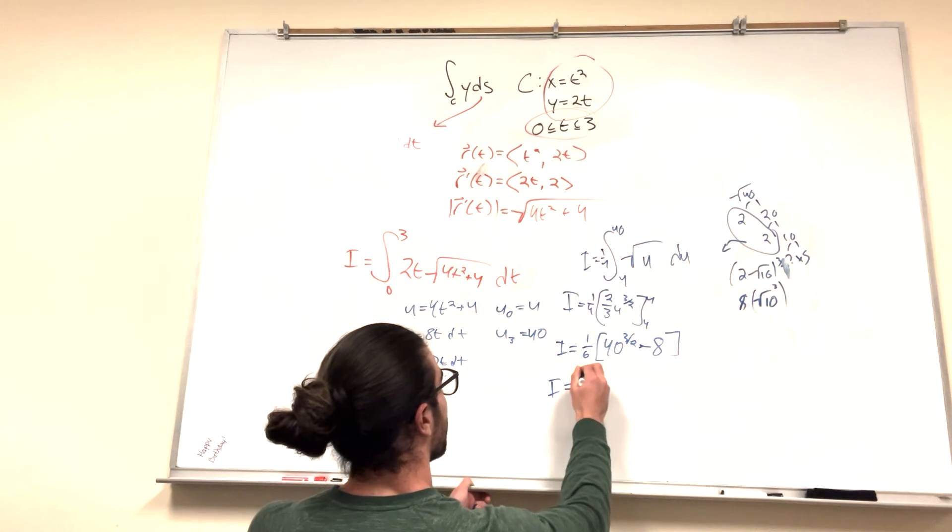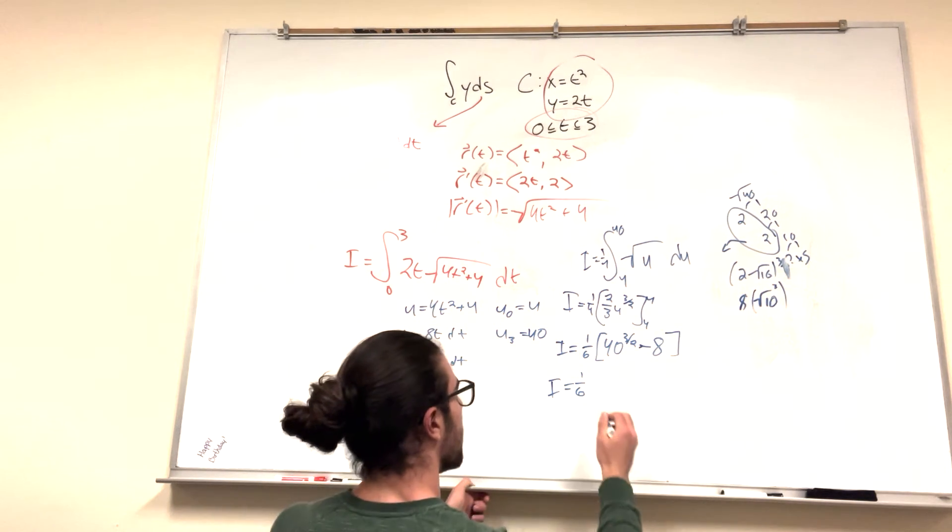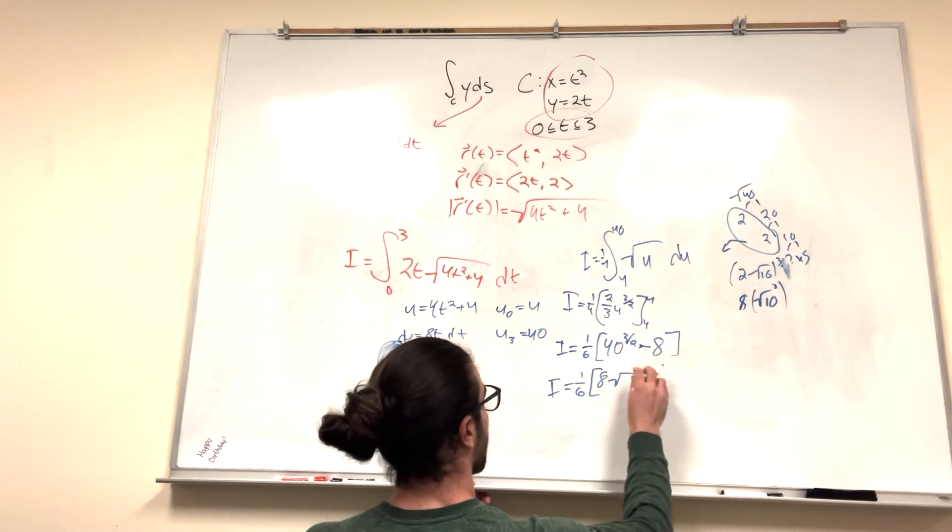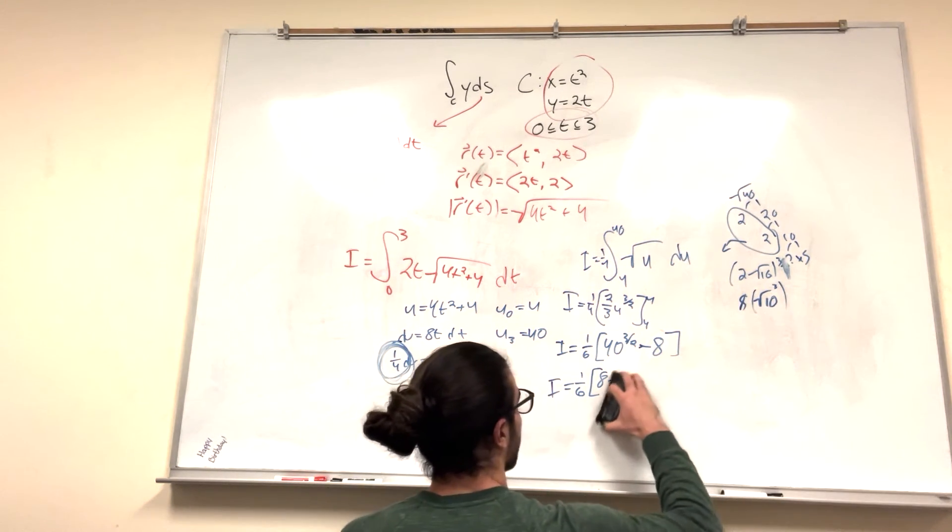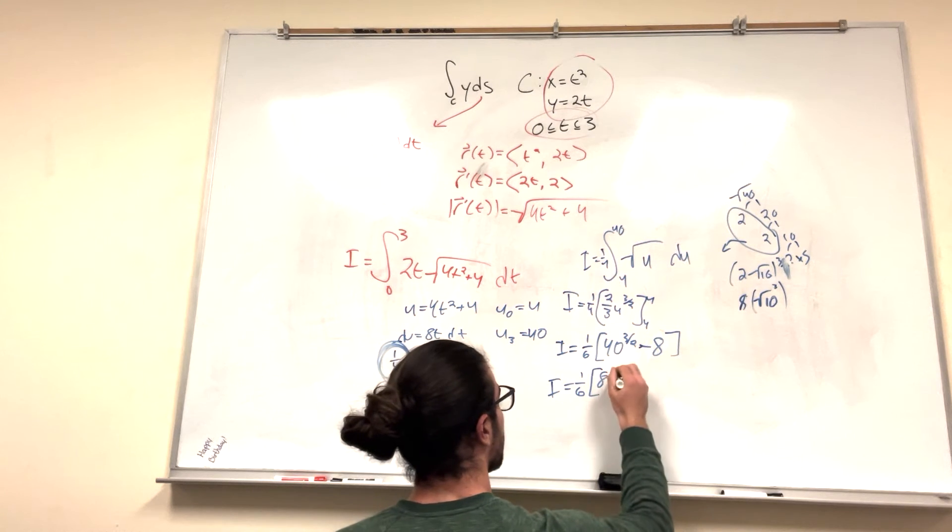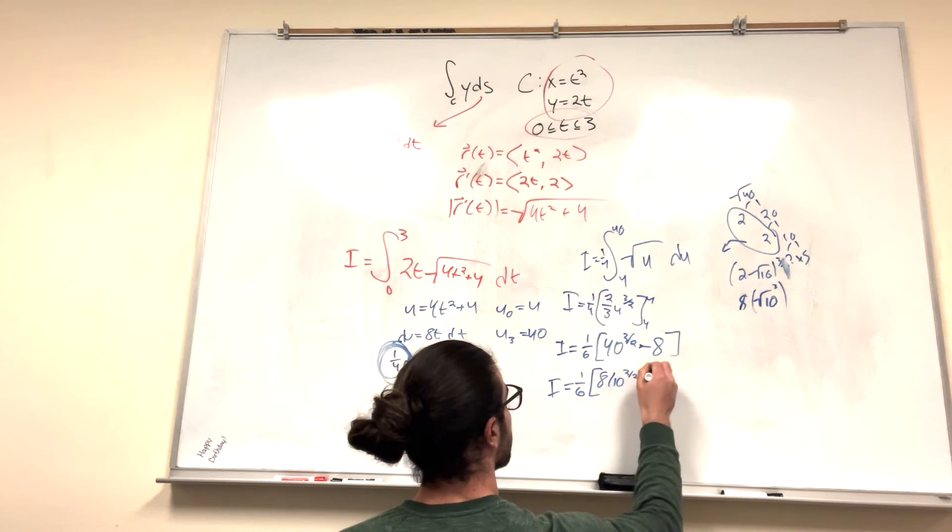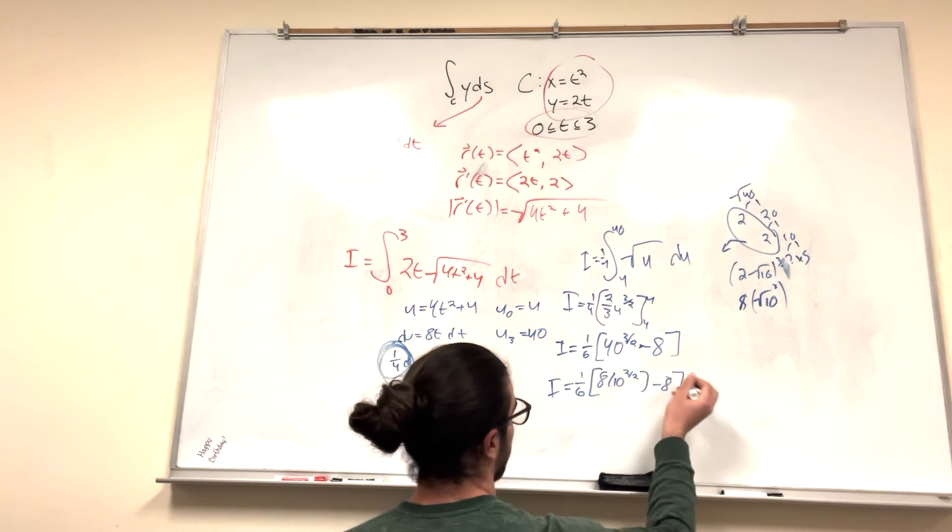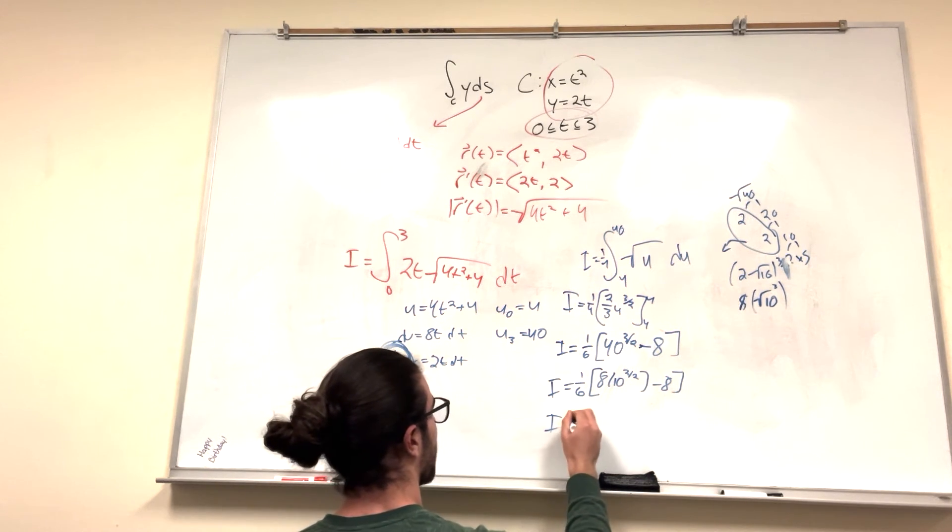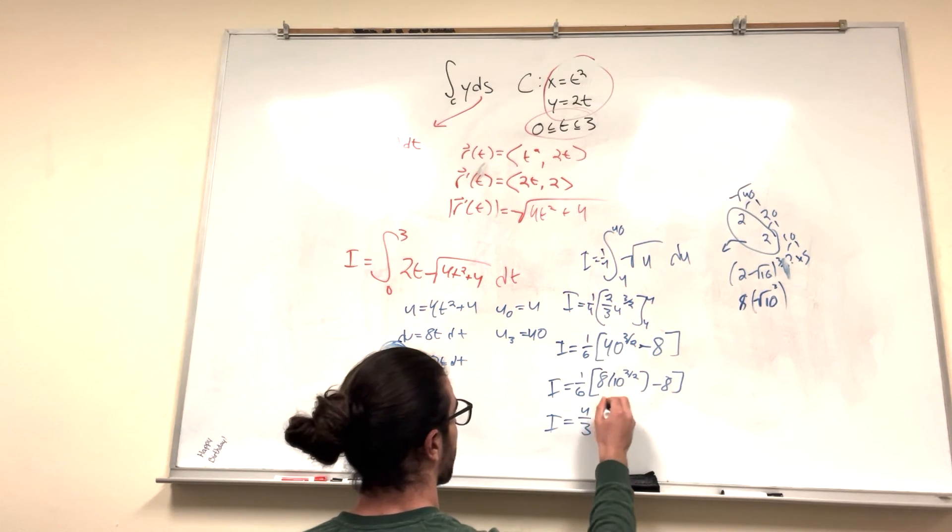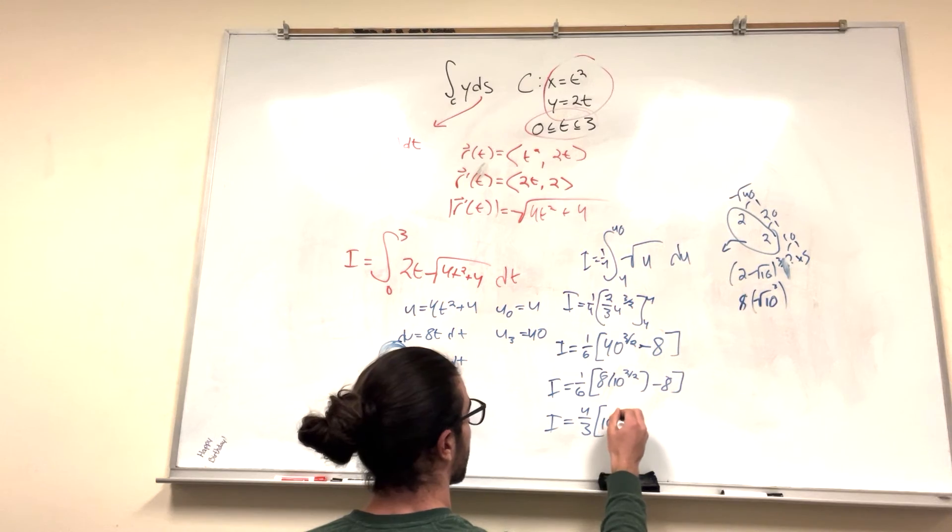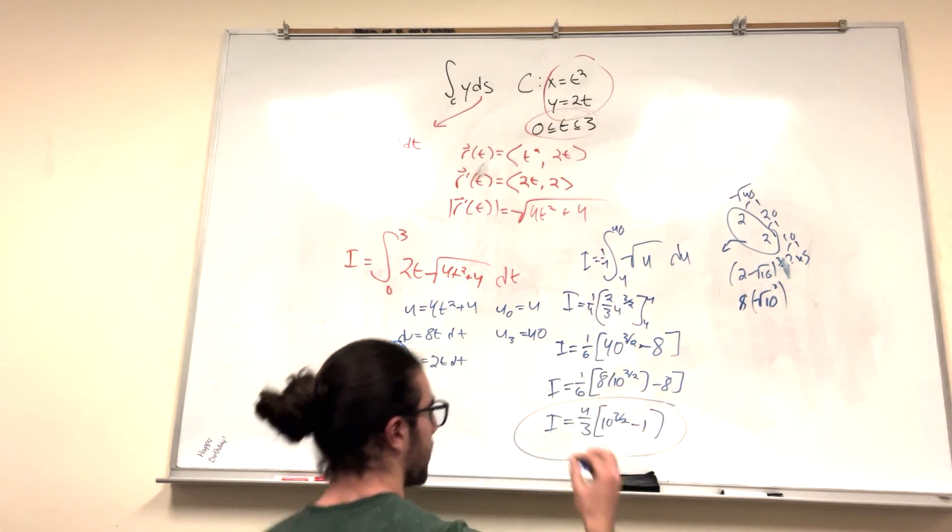So I is equal to 1 over 6, and then it'll be equal to 8 square root, or okay, not square root. 10 to the 3 halves minus 8. What you can do is you can bring out the 8, and this is how the book writes it. 4 thirds, 10 to the 3 halves minus 1. And that's your answer simplified.